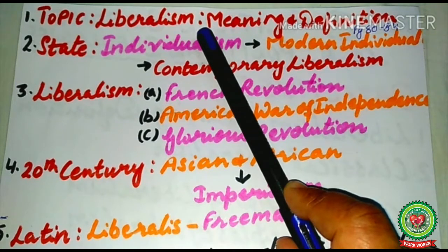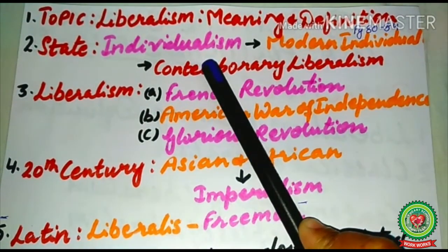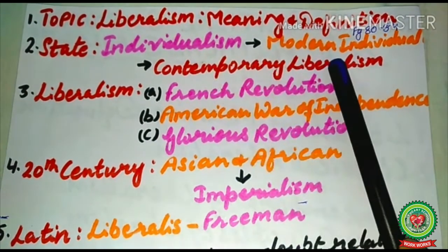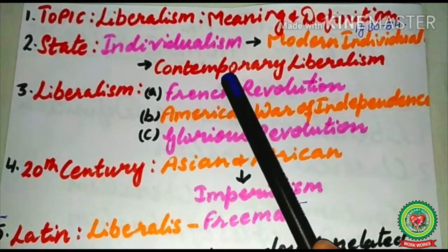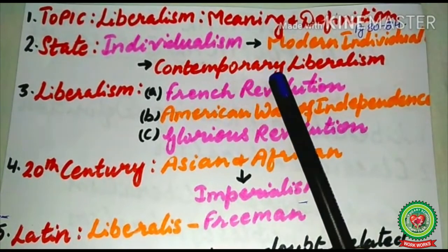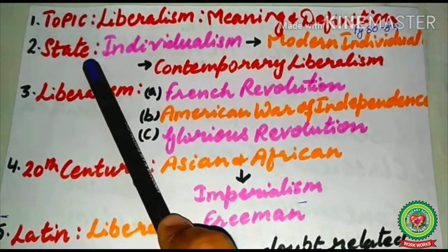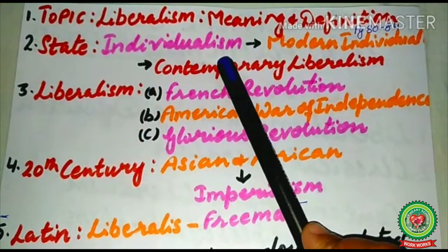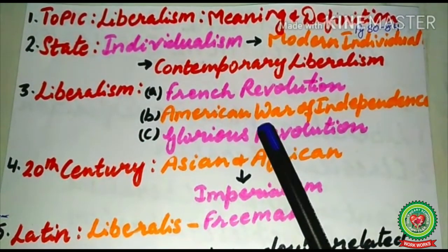Initially it was called individualism; later on it got the name modern individualism. At present in the 21st century it is known as contemporary liberalism. Liberalism has been a part of the state since its origin. Liberalism was a base of both the French Revolution and the American War of Independence.